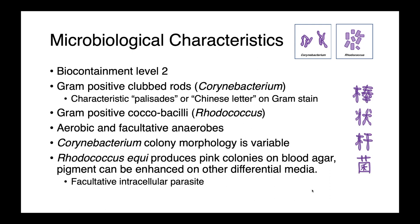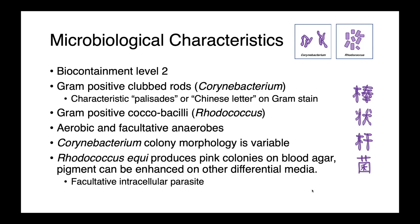Morphologically, Rhodococcus are described as being gram-positive coccobacilli, while Corynebacterium species are gram-positive club-shaped rods that are typically arranged into a characteristic palisade or Chinese letter formation. These bacteria are aerobic and facultative anaerobes. The colony morphology of Corynebacterium species is variable depending on which organism we're evaluating, while Rhodococcus equi produces pinkish colonies on blood agar.